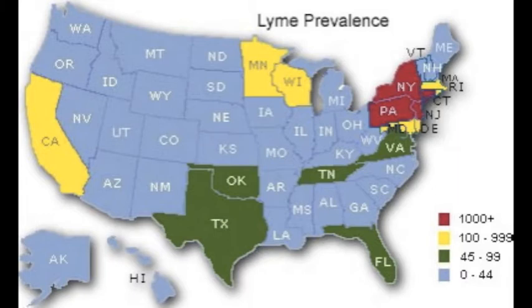Looking at this map, there are more cases on the east and west coast. The red color indicates the highest rates of infection. Yellow is still high up there and is more widespread.